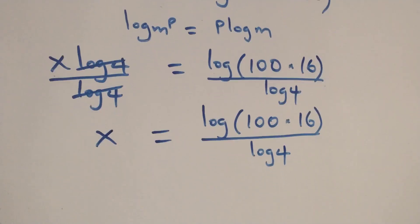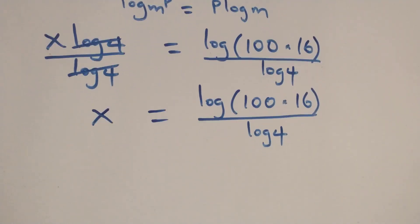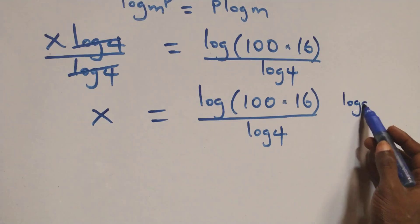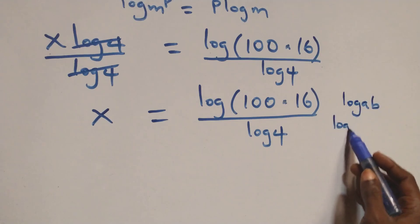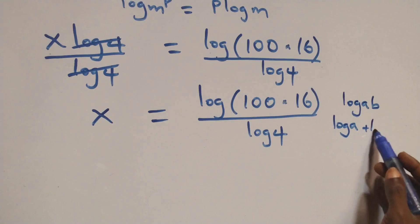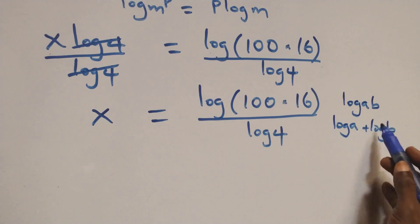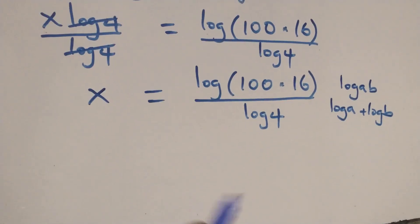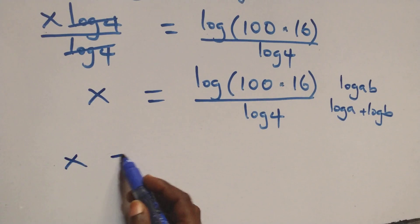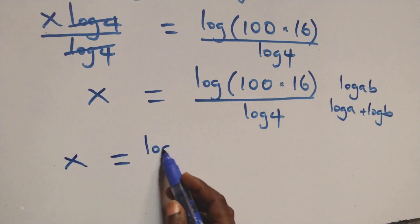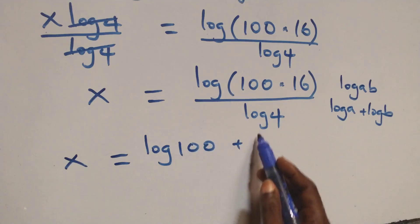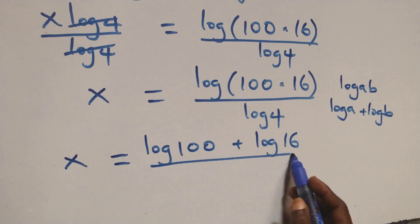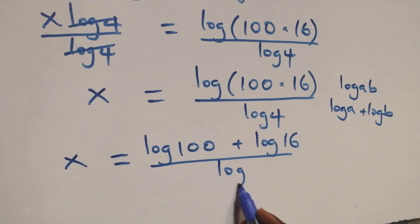At this next step, we apply the log product rule: log a times b is the same thing as log a plus log b. What we have here becomes x equals to log 100 plus log 16, all over log 4.